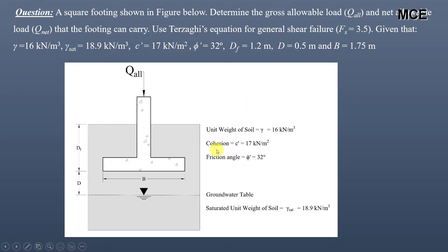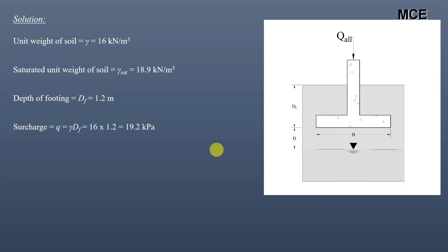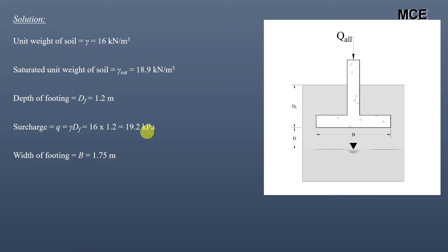Let us solve the question. Given: unit weight of soil γ = 16 kN/m³, saturated unit weight = 18.9 kN/m³, depth of footing Tf = 1.2 m. The surcharge Q = γ × Tf = 16 × 1.2 = 19.2 kPa. Width of footing B = 1.75 m, and depth of water table below the bottom of the footing = 0.5 m.